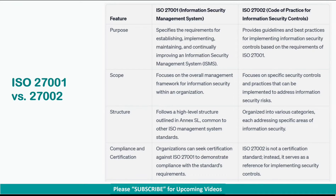ISO 27001 focuses on the overall management framework for information security within an organization. Whereas ISO 27002 focuses on specific controls and practices that can be implemented to address information security risks.